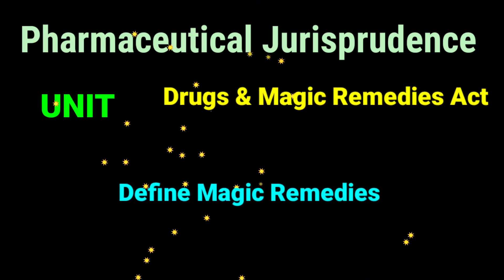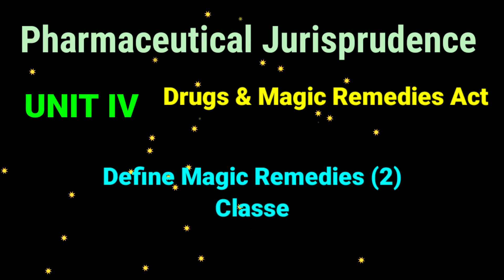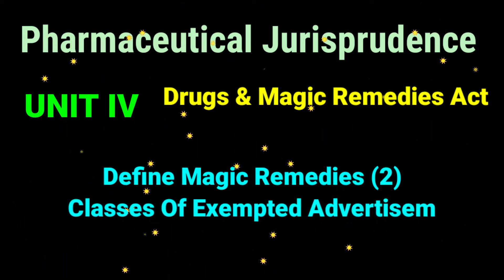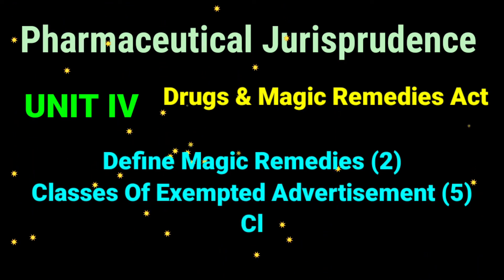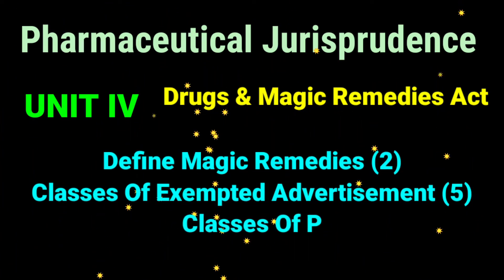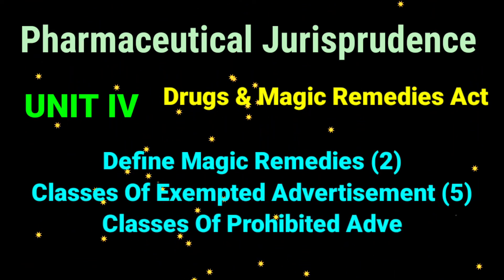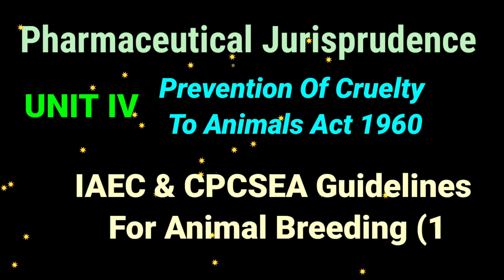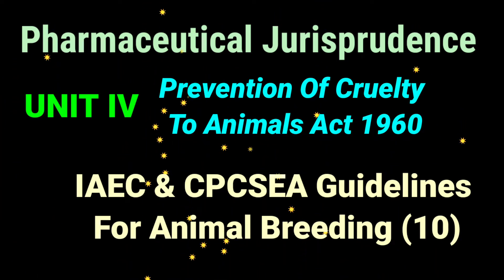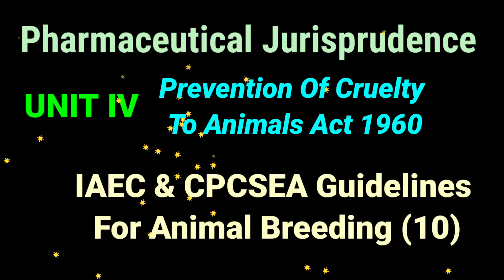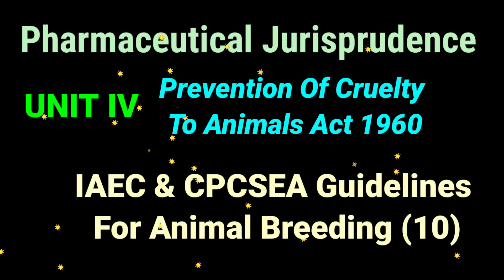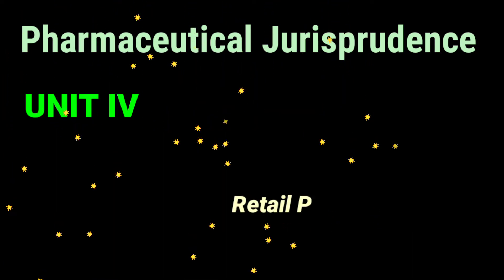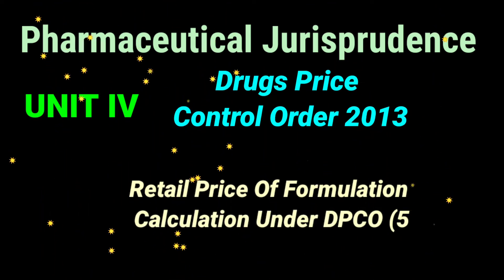The Drugs and Magic Remedies Act, otherwise called the Objectionable Advertisement Act, is also covered. Important questions include: definition of 'magic remedies' and examples, classes of accepted advertisements, and classes of prohibited advertisements. The Prevention of Cruelty to Animals Act 1960 is also in this unit, with its most important essay question being the IAEC — Institutional Animal Ethics Committee — and CPCSEA guidelines for animal breeding.